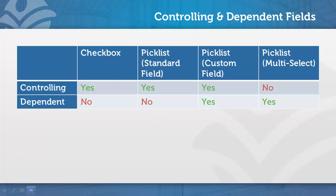The exception to this is that standard fields cannot be dependent on other fields. For instance, the field make can influence model because model is a custom field. However, that same field could not influence the values for opportunity stage, as stage is a standard field.